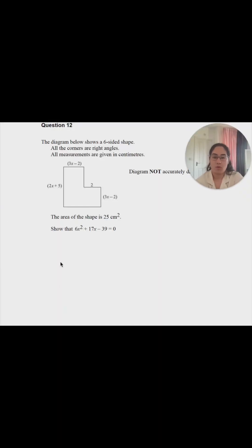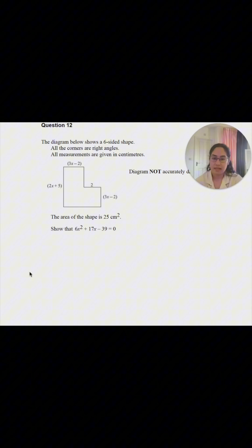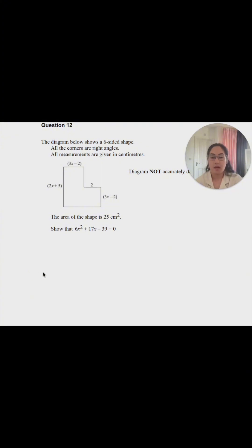Let's continue looking at past paper questions. The diagram below shows a six-sided shape. All the corners are right angles, all measurements are given in centimeters. The area of the shape is 25 centimeters squared. Show that 6x² + 17x - 39 = 0.